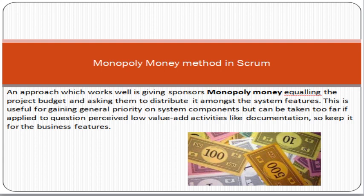When we need to prioritize the product backlog, we use an approach called the Monopoly Money Method. This approach works by giving sponsors monopoly money equal to the project budget and asking them to distribute it amongst the system features. This is useful for gaining general priority on system components, but should not be applied to low-value activities like documentation — keep it focused on business features like product catalog, customer payments, and other high-level features.